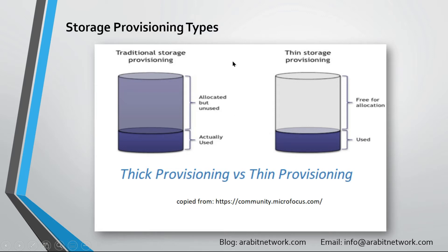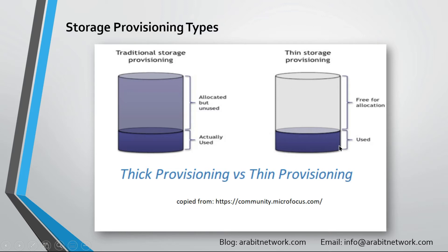Now let's look at the other type, which is the thin storage provisioning mode. If you create your LUN or volume with the same capacity — 10 gigs — but this time using thin provisioning mode, the physical allocation for this volume will be only zero kilobytes, or at least only a few kilobytes, less than one megabyte. So the volume or LUN has two types of capacity: the logical capacity, which is the 10 gigs, and the physical capacity, which is currently nothing.